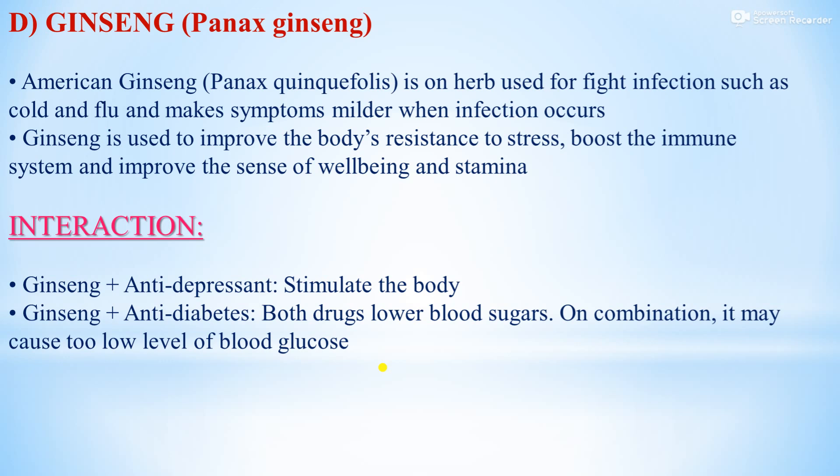The fourth drug is Ginseng — American Ginseng, that is Panax quinquefolius. It is an herb used to fight infections such as cold and flu and makes symptoms milder when infection occurs. Ginseng is used to improve the body's resistance to stress, boost the immune system, and improve the sense of well-being and stamina.